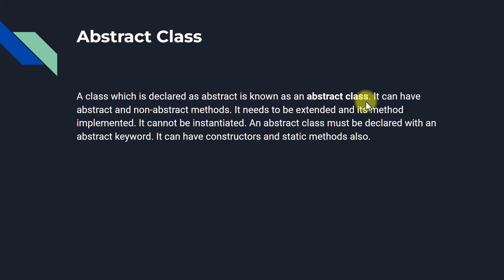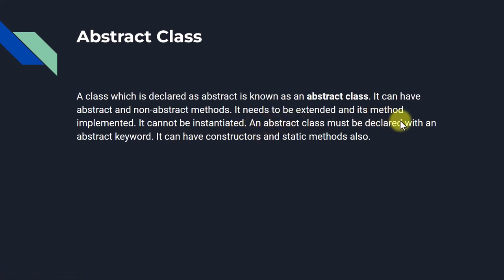An abstract class can have both abstract and non-abstract methods. Abstract methods are those where the abstract keyword is used. The abstract class needs to be extended and its methods implemented. It cannot be instantiated. An abstract class must be declared with the abstract keyword, and it can also have constructors and static methods.